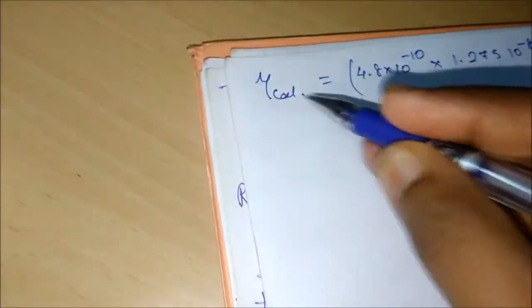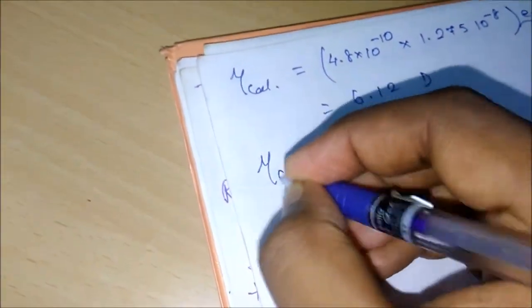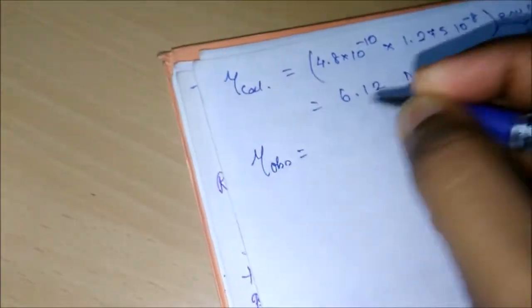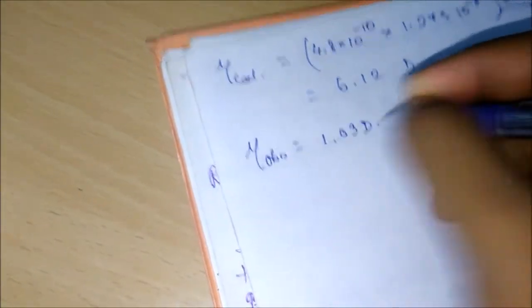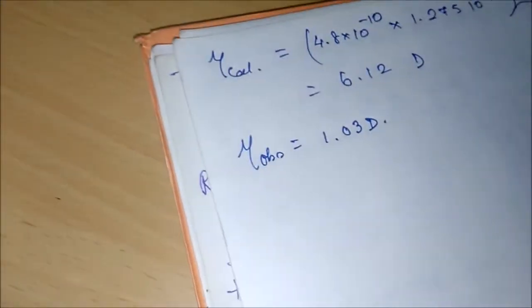Okay, this is what we have calculated. And in our given question, if you have remembered, we were given that μ observed is equal to 1.03 D.